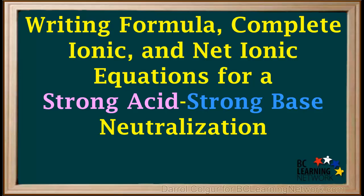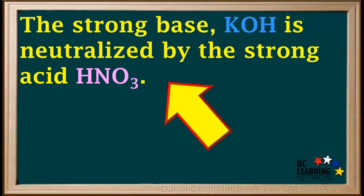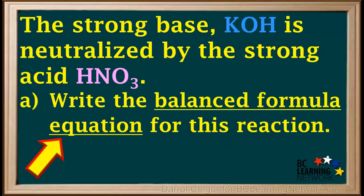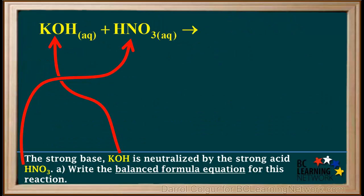We'll start by writing these three equations for a neutralization reaction involving a strong acid and a strong base. We're given that the strong base KOH is neutralized by the strong acid HNO3. The A part of this question asks us to write the balanced formula equation for this reaction. We start by writing the formulas for the reactants, KOH and HNO3. Both of these are soluble compounds, so we label them as aqueous.